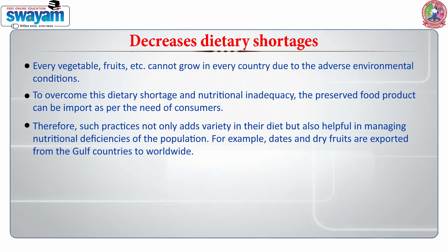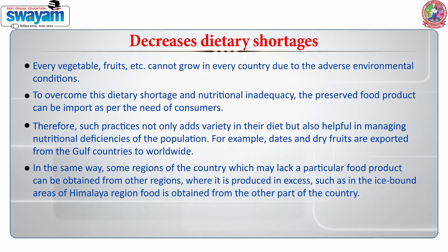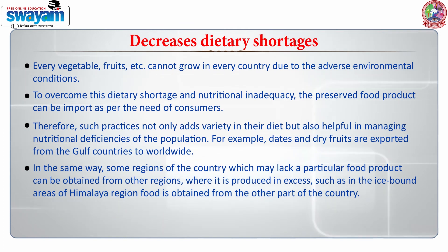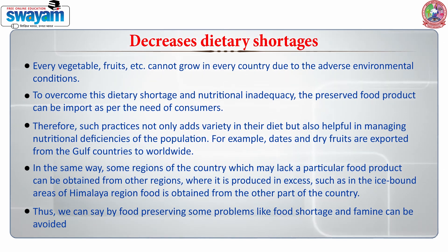Such practices not only add variety to the diet but are also helpful in managing nutritional deficiencies of the population. For example, dates and dry fruits are exported from Gulf countries worldwide. Similarly, regions within a country that lack a particular food product can obtain it from other regions where it is produced in excess — such as in the ice-bound areas of the Himalayan region, where food is obtained from other parts of the country. By preserving food, problems like food shortage and famine can be avoided.